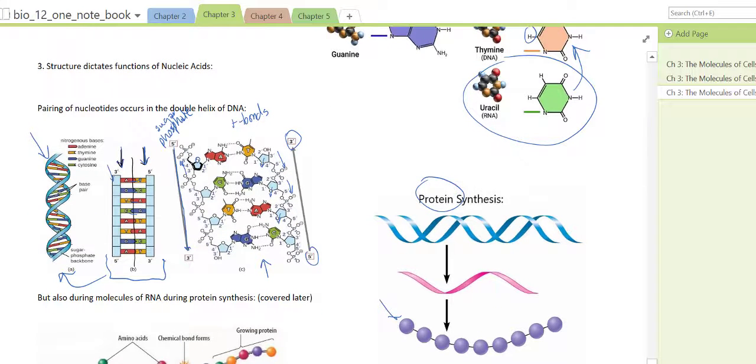That's the arrangement of nucleotides in DNA. They pair up forming two sides which spiral into an alpha helix shape. So we call this the alpha helix.